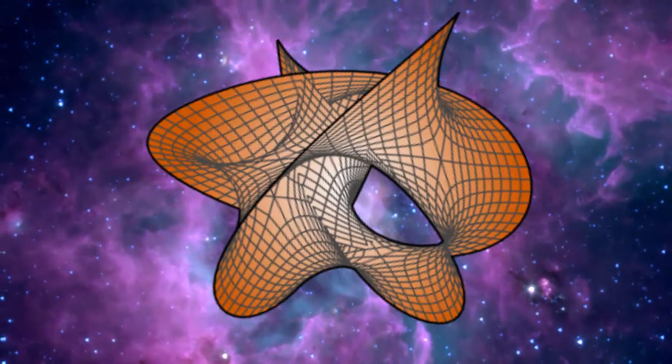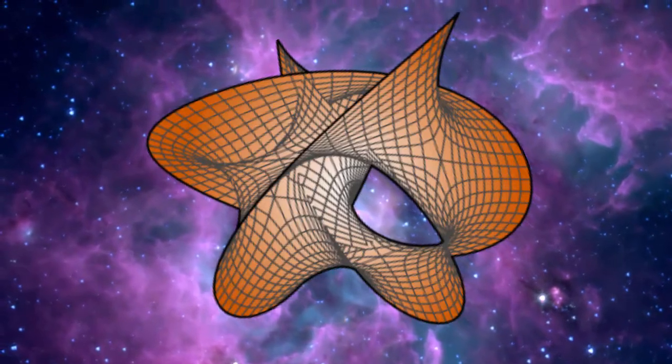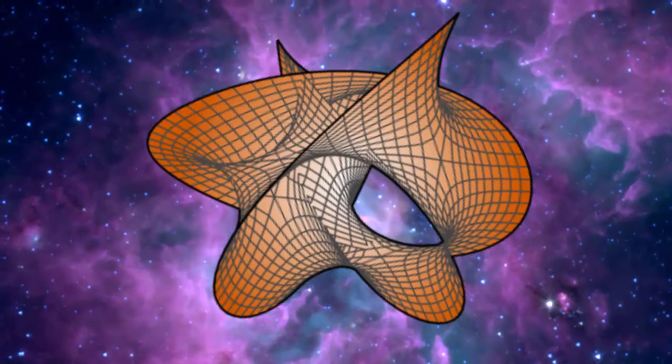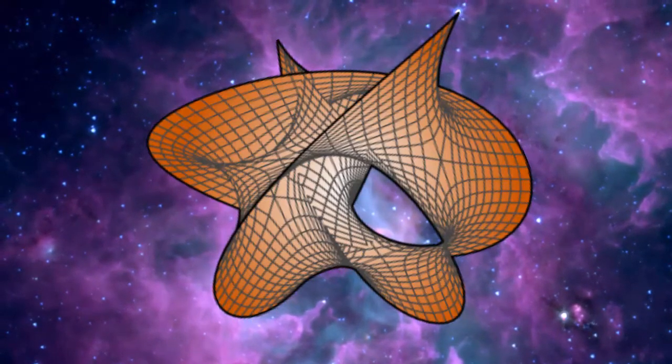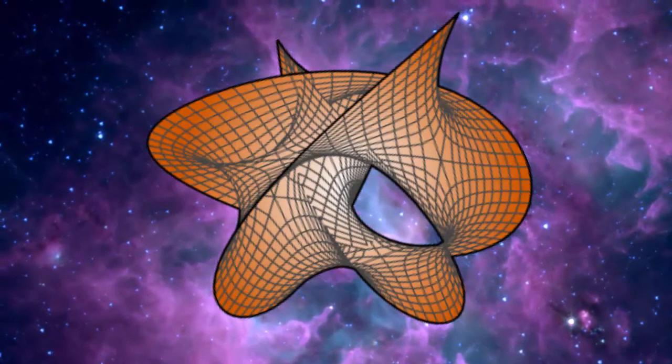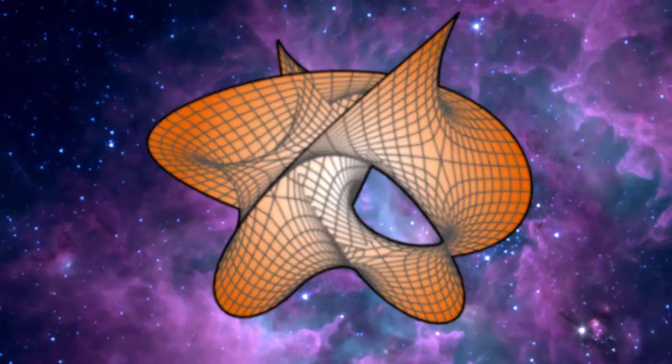The Calabi-Yau manifold mathematically proves that we can't see and interact with these other dimensions because they are twisted, folded, and compacted tightly into one another into this manifold shape. And this all leads back to my original point.